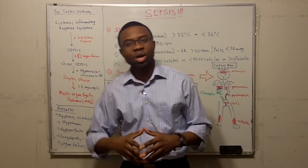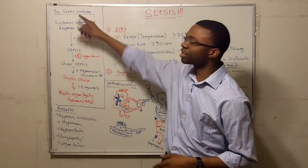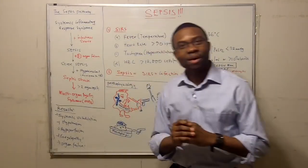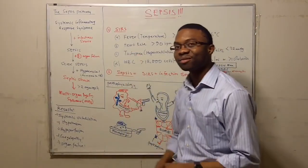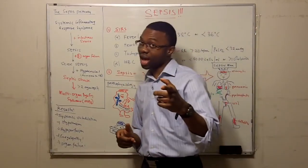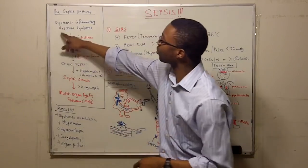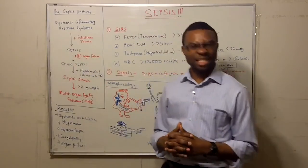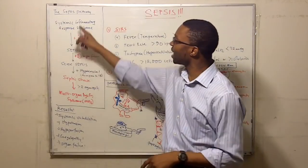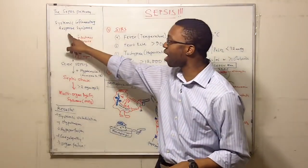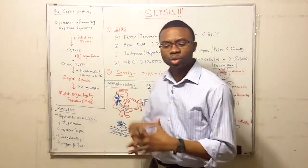Before we go forward, we need to understand the sepsis pathway. Because before the bacteria gets into the blood, we're going to get a little wink-wink from the body telling us, watch out. So what are we going to start with? We're going to start with a systemic inflammatory response syndrome, which we're going to talk about.